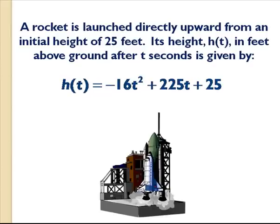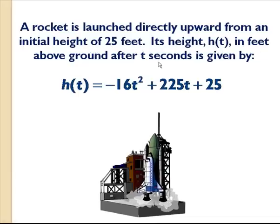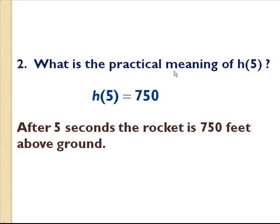Well let's go back to the original question. A rocket is launched directly upward. Initial height is 25 feet. Its height is given by h(t) and that's in feet. After t seconds. So the time is in t seconds. So getting back to the practical meaning of h(5). Well we could say after 5 seconds the rocket is 750 feet above ground.